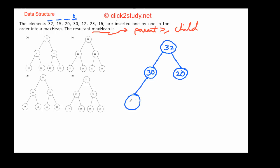After the swap, we check again — it's possible the newly placed node might also violate the heap property with its new parent. In this case, 30 is not greater than 32, so we're fine. Next we insert 12 at the next available position; 12 is less than its parent 30, so no swap needed. Then we insert 25 at the next position.